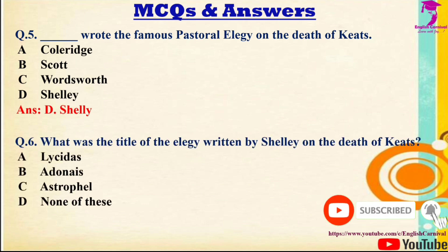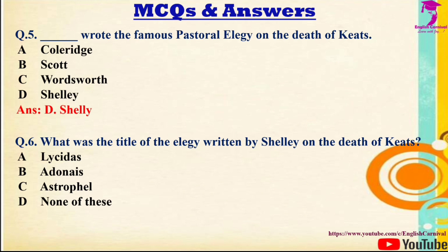Question 6: What was the title of the elegy written by Shelley on the death of John Keats? Options: A) Lystidas, B) Adonais, C) Astrophel, D) None of these. Correct answer is A — Adonais.